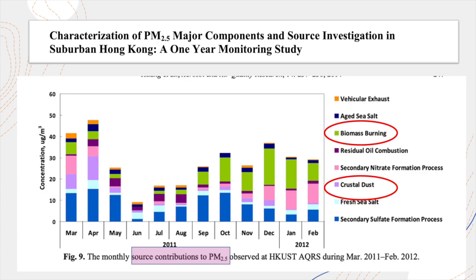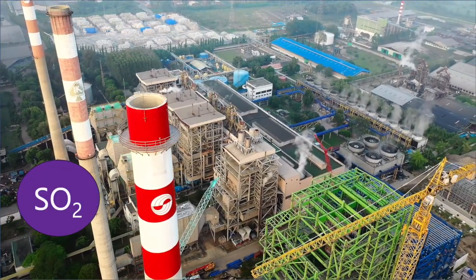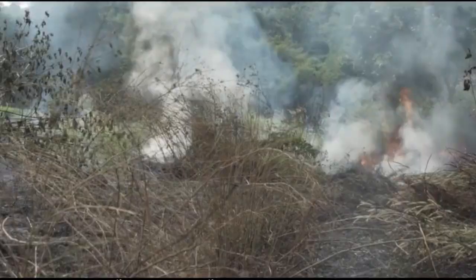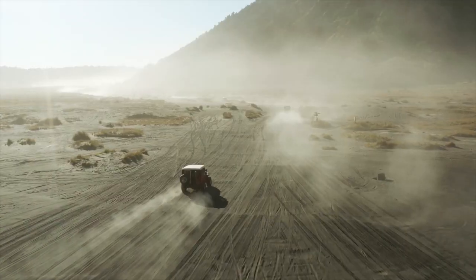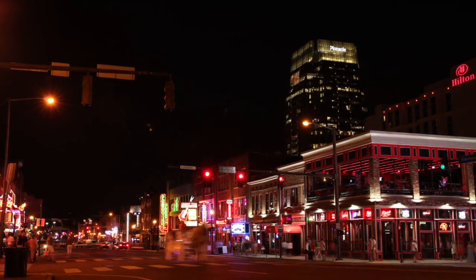The composition of PM 2.5 will tell you its source. And while the composition varies everywhere, the most common sources of PM 2.5 are secondary formation from sulfate and nitrates, biomass burning, dust from the ground, and vehicle exhaust.